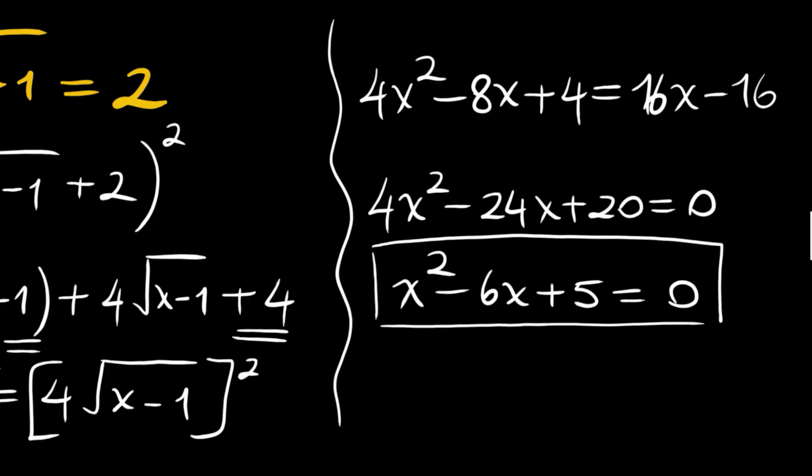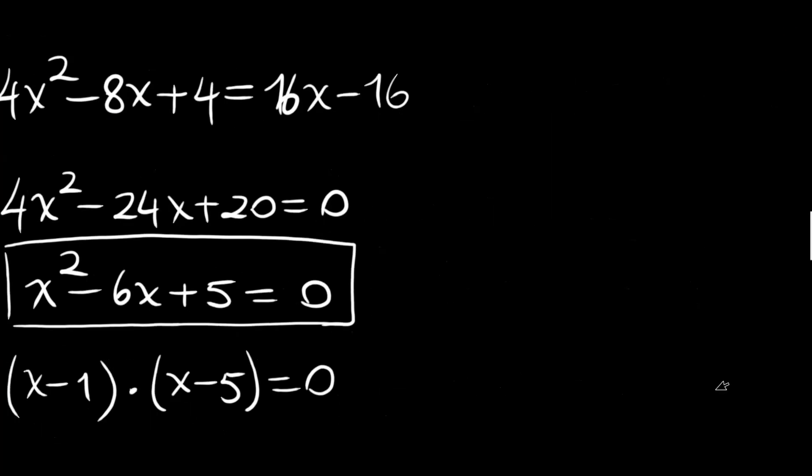And factorizing this, we can write x minus 1 times x minus 5 is equal to 0. So x can be 1, or x can be 5.